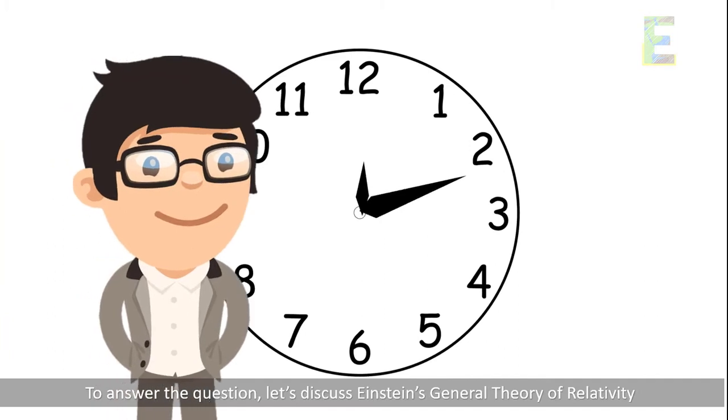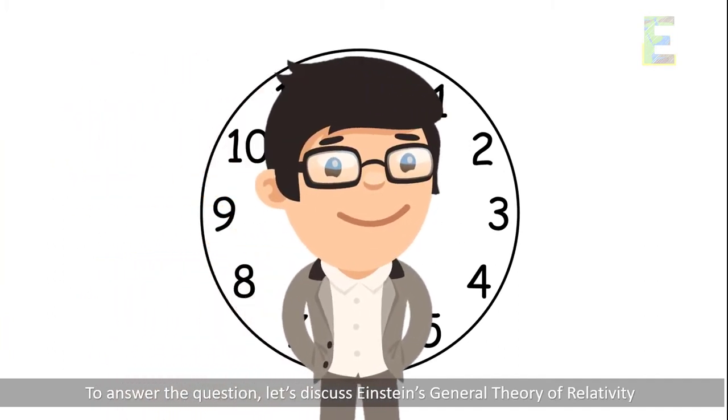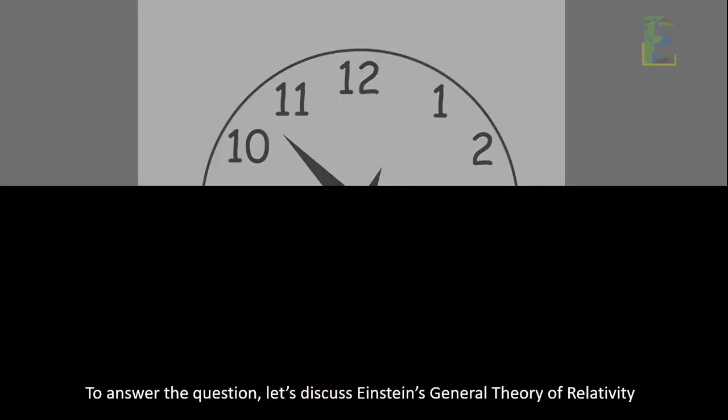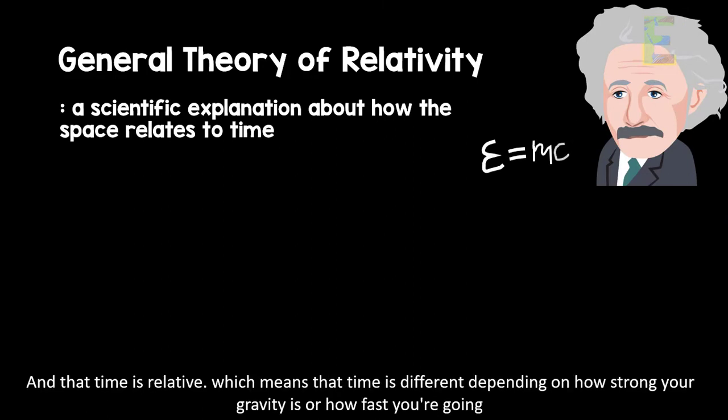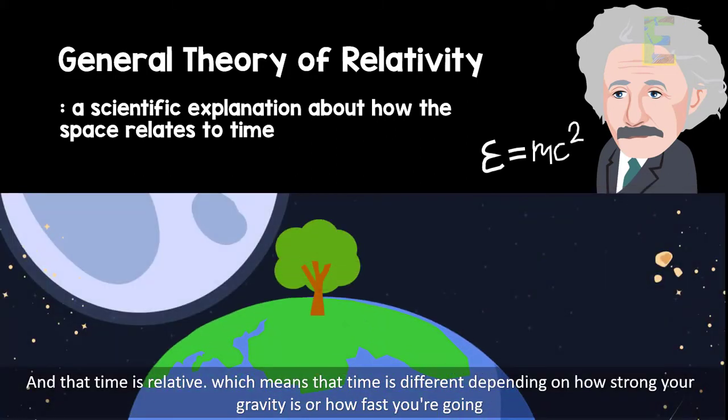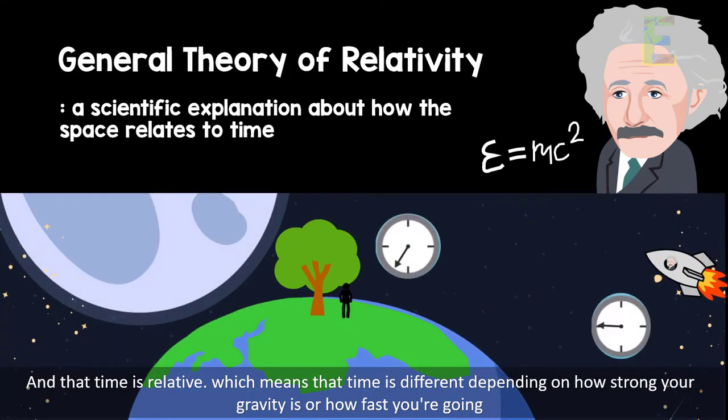To answer the question, let's discuss Einstein's general theory of relativity. Einstein's general theory of relativity introduces the concept of time and space, and that time is relative, which means that time is different depending on how strong your gravity is or how fast you are going.